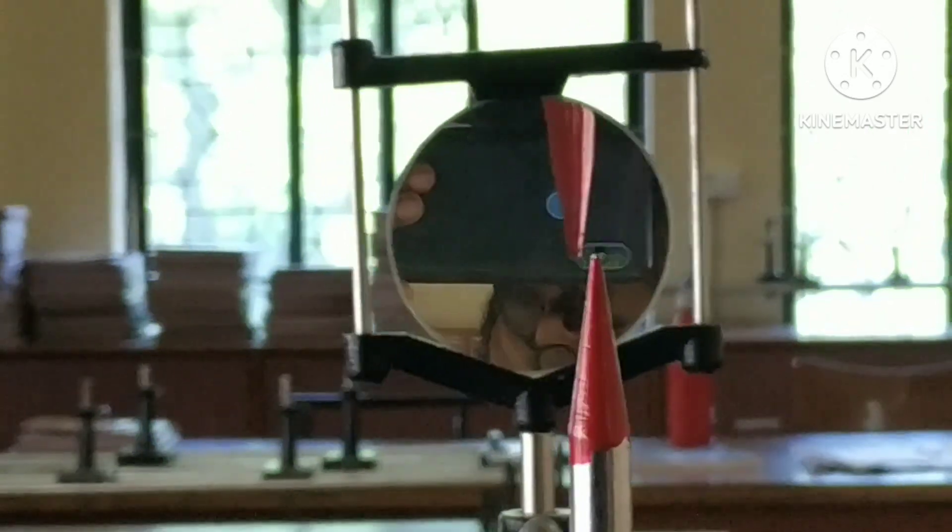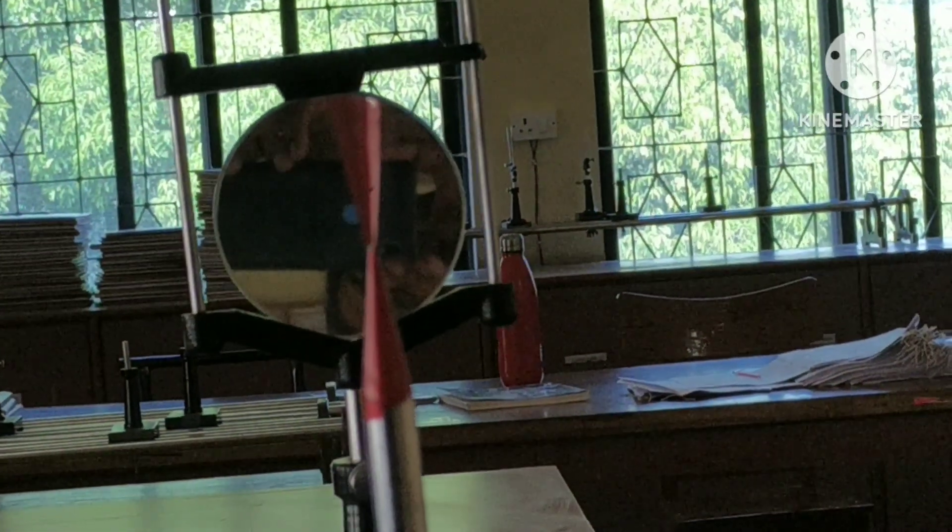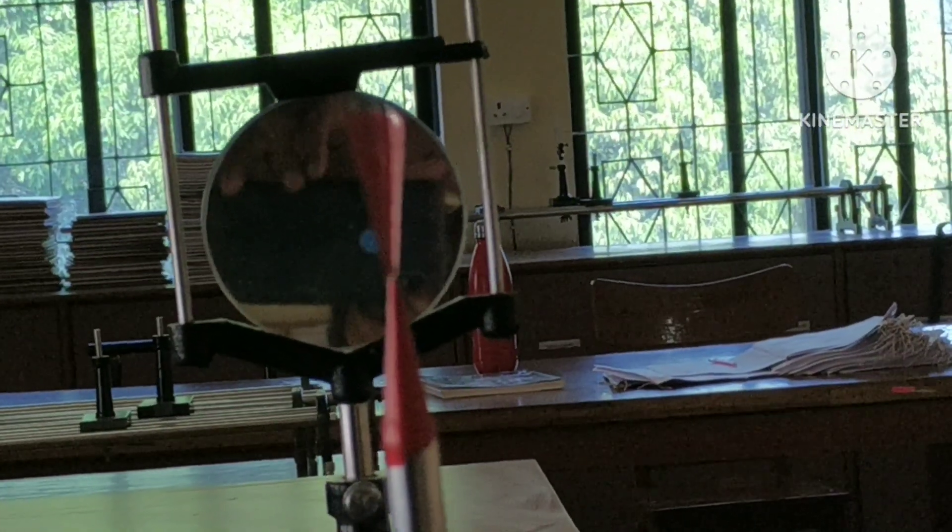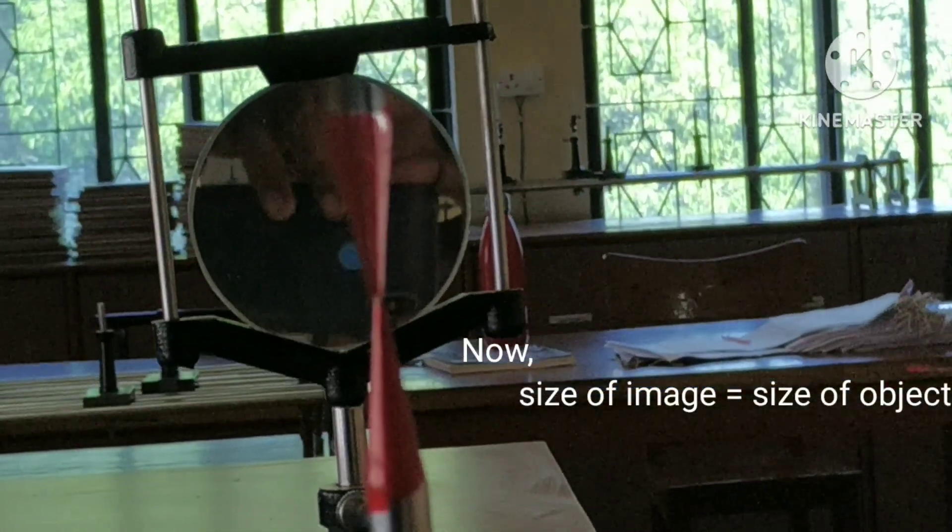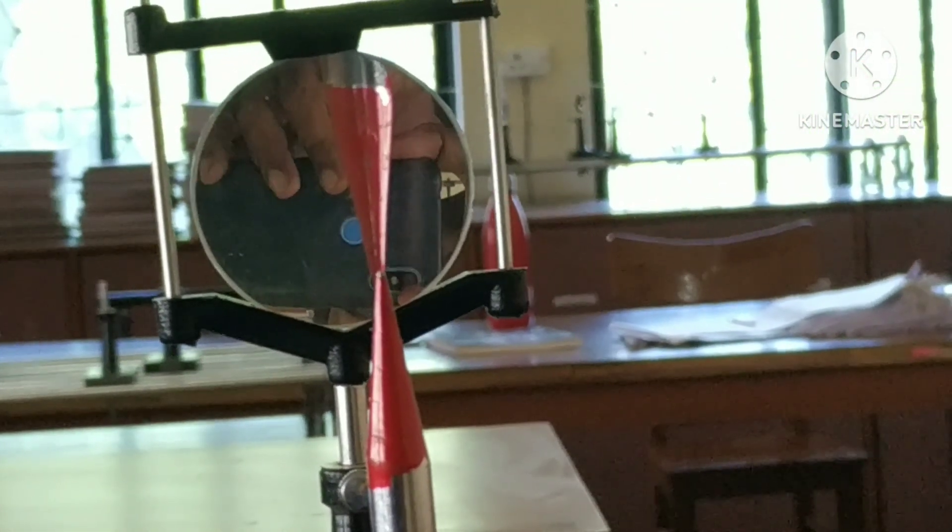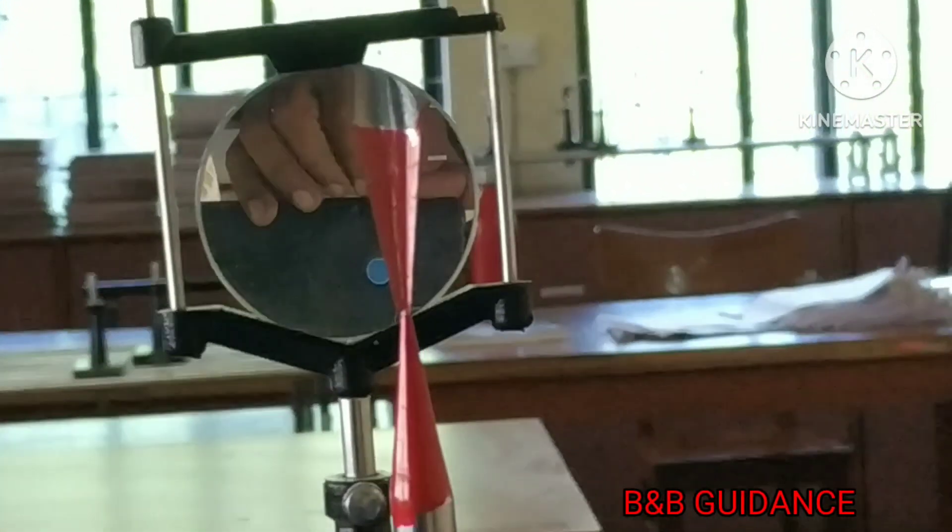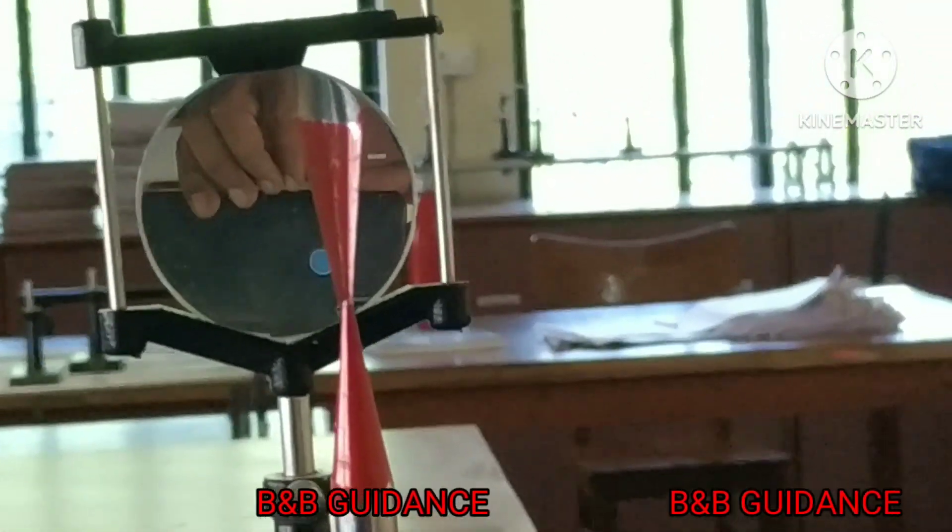On further adjusting the distance, the tip of the image coincides with the tip of the object. Now we feel that image and object shift together. When you do the experiment, close one of your eyes and observe.